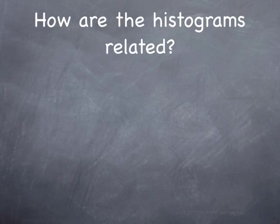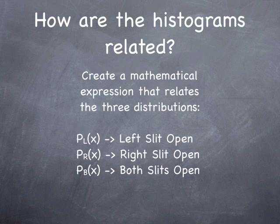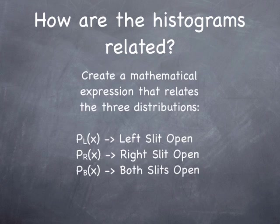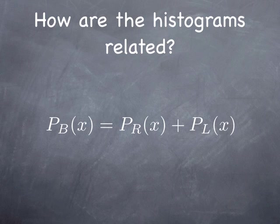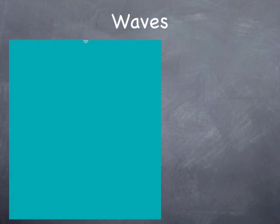How are these histograms related? Can you come up with some kind of a mathematical expression that relates the left probability distribution and the right probability distribution to the probability distribution you'd expect to see with both slits open? I hope you came up with something like this, where the probability distribution with both slits open is the simple sum of the distributions with either of the two slits open.